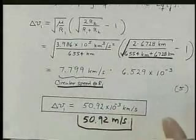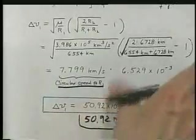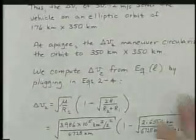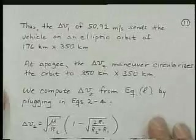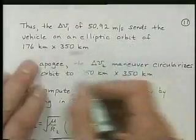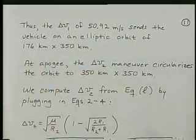Not a very large number to get up to that orbit. And so once you've done that maneuver of 50.92 meters per second, you are in an elliptic orbit that's 176 by 350 kilometers.